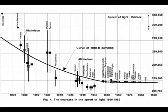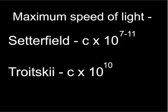This second graph shows that C was still decreasing in the 1940s. What was its starting speed? From astronomical observations, there is evidence that it was up to 100 billion times faster at the time of creation. One Russian astronomer independently placed it at 10 billion times faster. Many secular scientists now accept that C may have been much higher in the past.